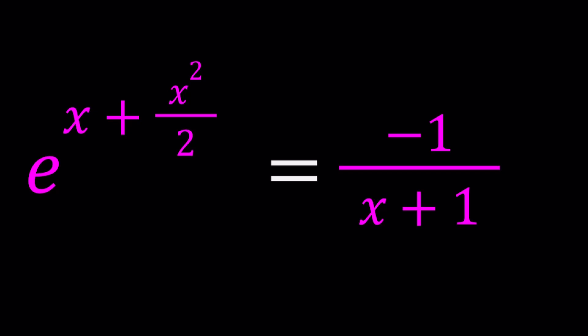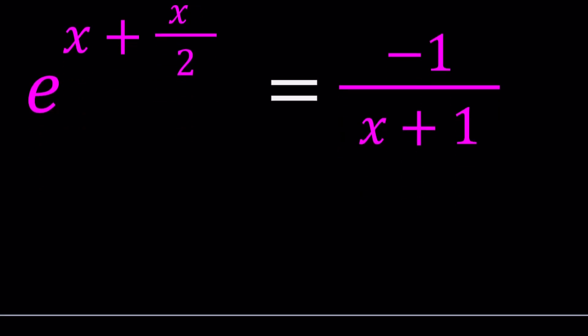First of all, I want you to notice that we can multiply both sides by x plus 1 as long as x does not equal negative 1. So we're going to have that condition that x does not equal negative 1 and we can go ahead and multiply or cross multiply like this.